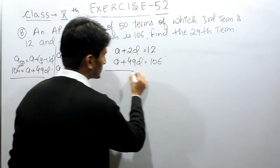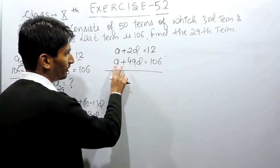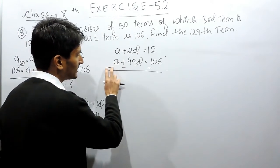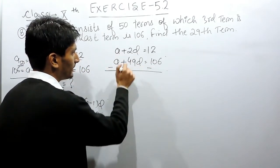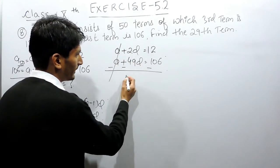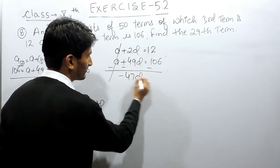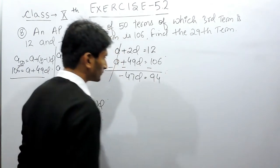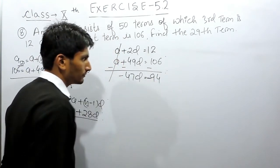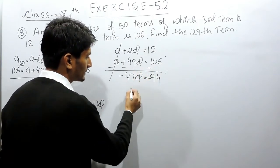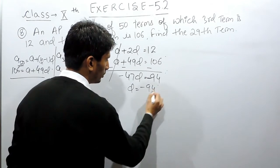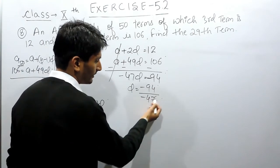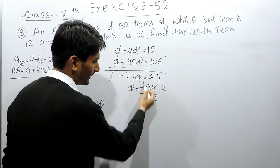So now I have two equations. I can solve these two equations to find out the value of A and D. It is better to subtract these two equations directly. So when I subtract these two, the sign will be changed. So A will be cancelled out, and this will be 47D with negative sign. And 12 minus 106 will be 94 with negative sign, because the greater value has negative sign in both cases. The value of D must be 94 upon 47. 47 can be cancelled two times, and minus can be cancelled with minus, so here the common difference is 2.